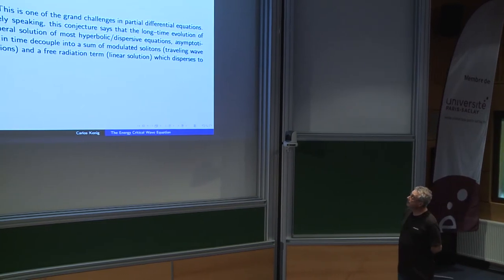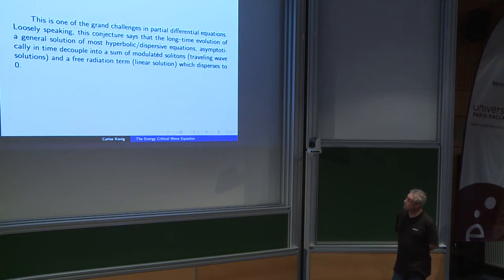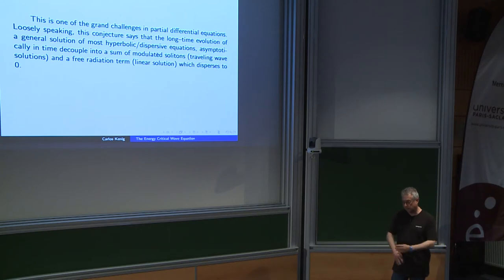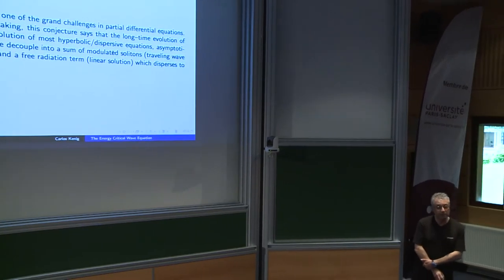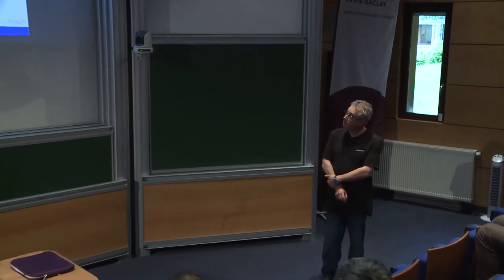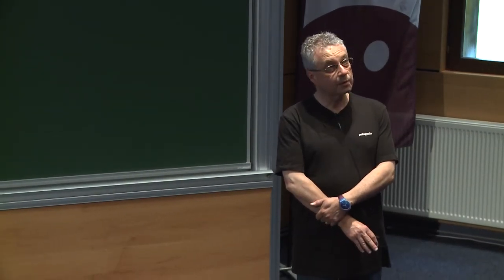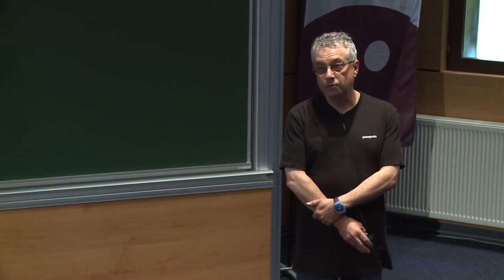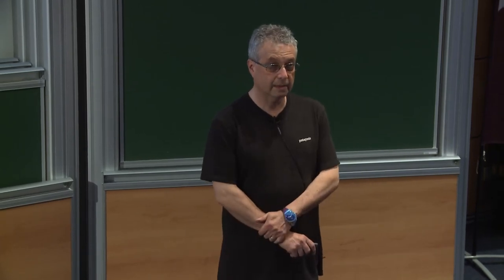Loosely speaking, the conjecture says that in order to understand the long-time asymptotics of most hyperbolic and dispersive equations, asymptotically in time — after some intermediate regime where you cannot say anything — the asymptotics resolve into a sum of modulated solitons. These are traveling waves that are scaled and translated, plus a free radiation term (the solution of the associated linear problem), plus something that goes to zero. It gives a complete description of long-term asymptotics: the solutions may behave strangely for intermediate times, but eventually there is a simplification.